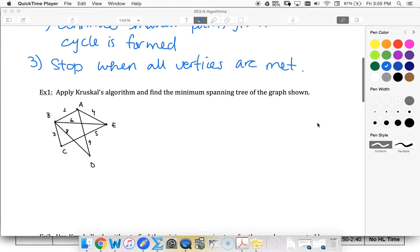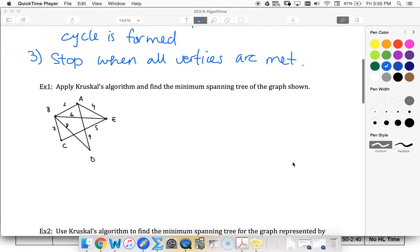And again, that's because for a spanning tree, for trees, we always have n minus 1 edges.